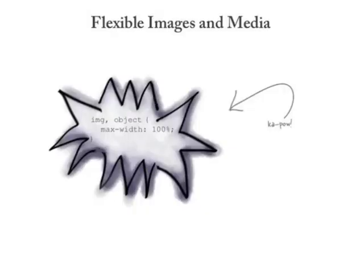The third and final element of responsive design is flexible images and media. It is as simple as assigning max-width: 100% in CSS to images and objects. This keeps images from breaking out of their parent elements and lets them scale and flow with the layout comfortably. One important note: make sure you don't include height and width attributes in the HTML markup, and the CSS rule will take care of everything else.